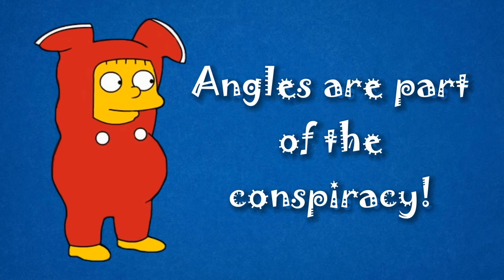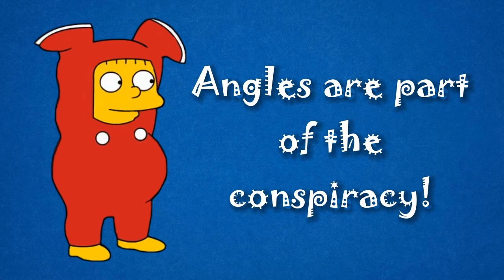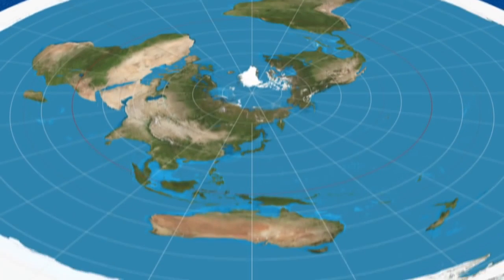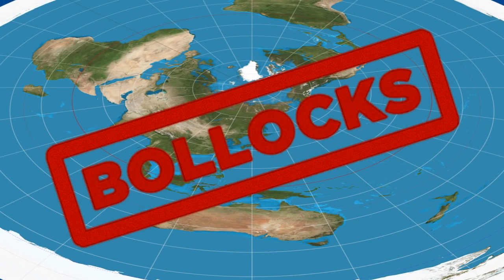Particularly paranoid Flat Earthers needn't rely on GPS to check this. They can use the old-fashioned methods of establishing longitude and latitude, and find themselves wondering why reality disagrees with their stupid beliefs. For the rest of us, the reason is simple: they're geometrically illiterate buffoons, and this is bollocks.